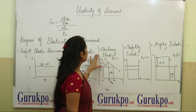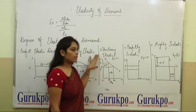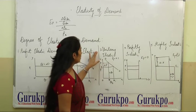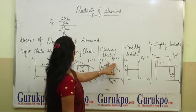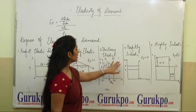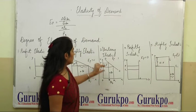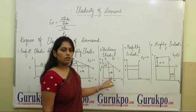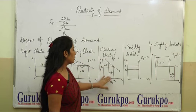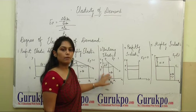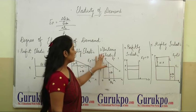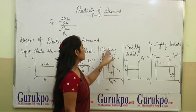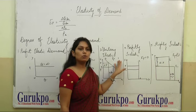The third degree is unitary elastic demand, where Ep is equal to 1. This means the change in price is equal to the change in quantity demanded — the proportionate change is equal. That is why it is known as unitary elastic demand, denoted by Ep equal to 1.